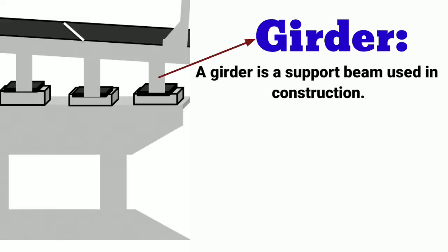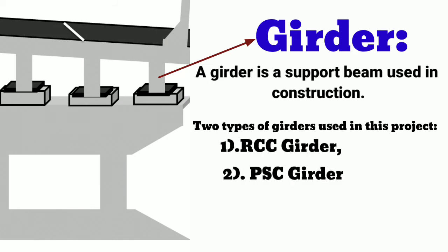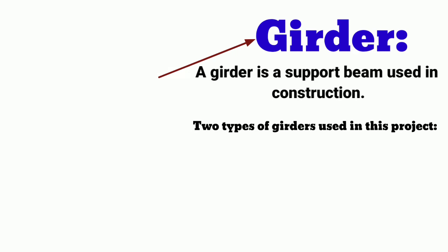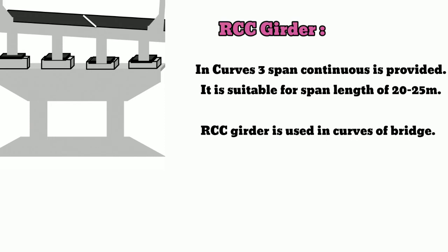Now, girders. Girders are support beams used in bridge construction. There are two types of girders used in this project: RCC girders and PSC girders. For RCC girders, three-span continuous construction is provided. It is suitable for a span length of 20 to 25 meters, and RCC girders are used in curves or curved bridges.